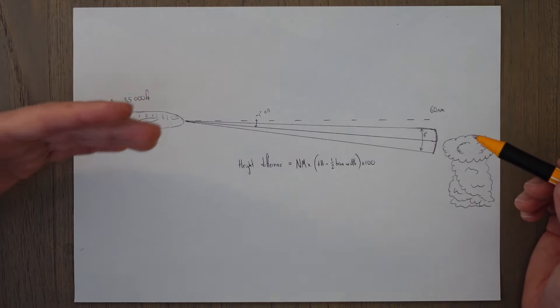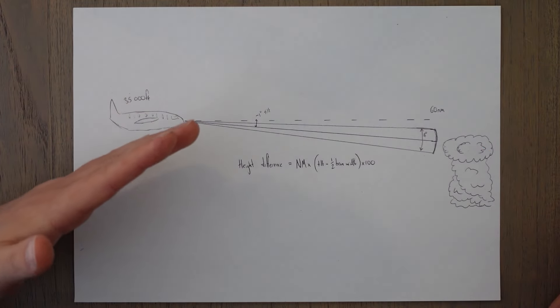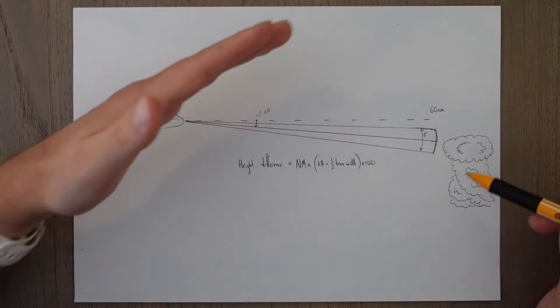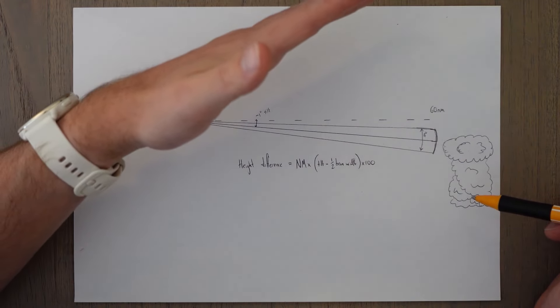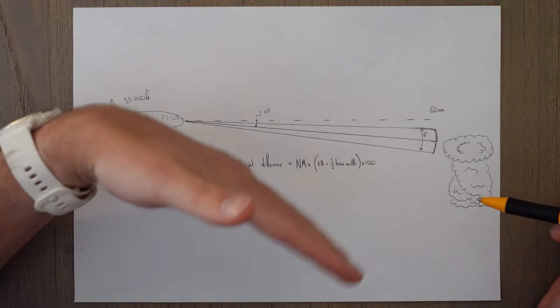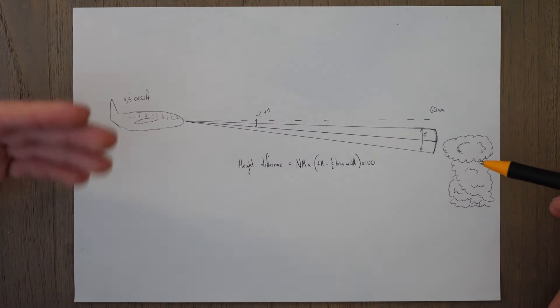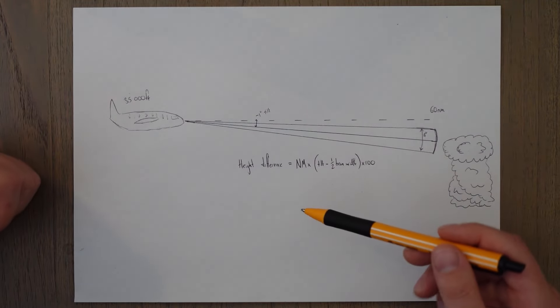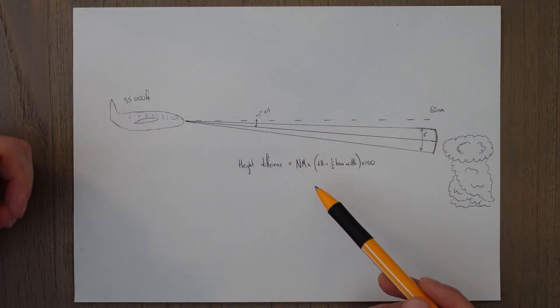The way we do this is we basically tilt the radar until the screen is showing nothing. You can imagine the beam pointing up at 15 degrees here it's not going to detect this cloud over here. Then what we do is we slowly reduce or increase the tilt until we just get returns. These would be the cloud tops. Then we can use the formula of height difference equals the nautical miles that we get the echoes from times tilt minus half the beam width times 100.